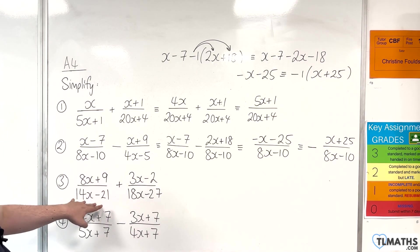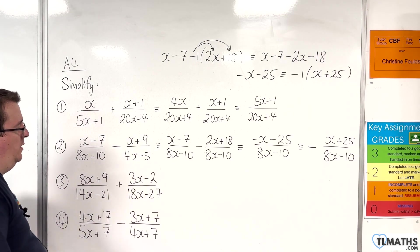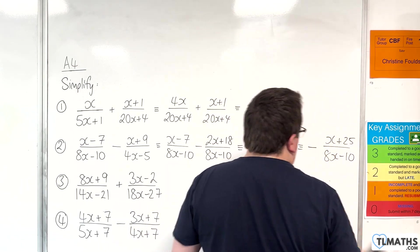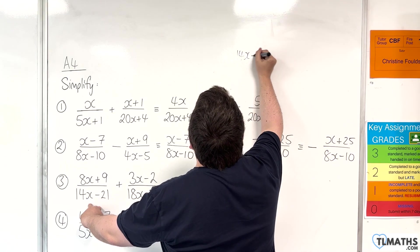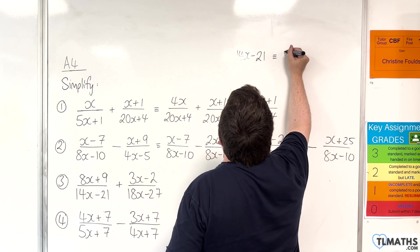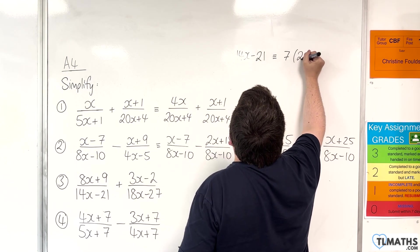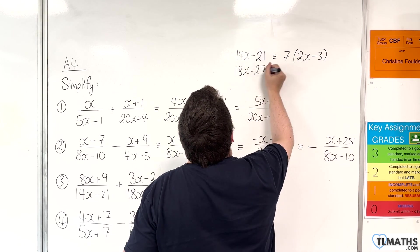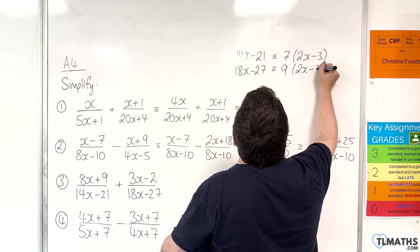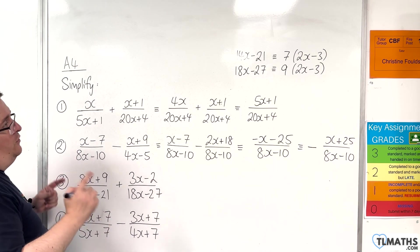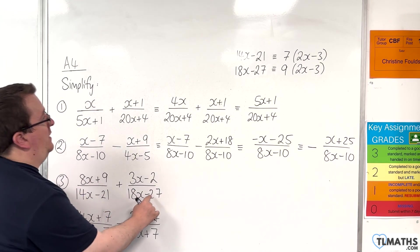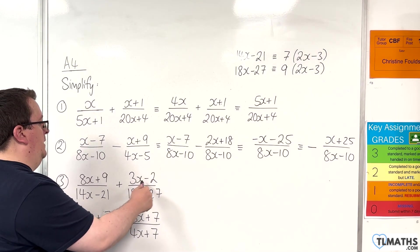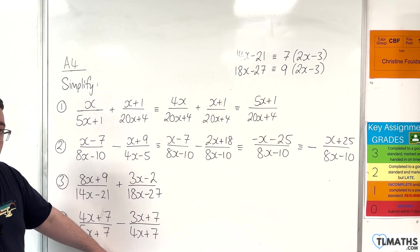Number 3: 8x plus 9 over 14x take away 21, plus 3x take away 2 over 18x take away 27. Let's look at those denominators — can they be factorised? 14x take away 21: factor out 7 to get 7 lots of 2x take away 3. And 18x take away 27: factor out 9 to get 9 lots of 2x take away 3. So we have 7 lots of 2x take away 3, and 9 lots of 2x take away 3. Multiplying the first top and bottom by 9, and the second top and bottom by 7, we can avoid cross multiplication.